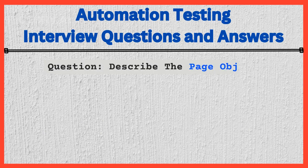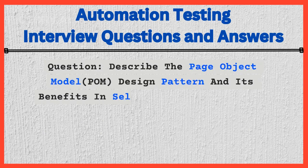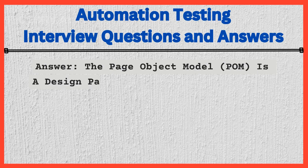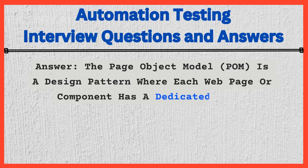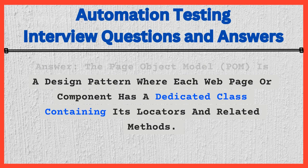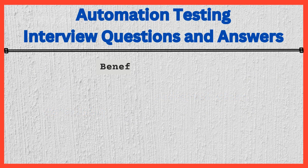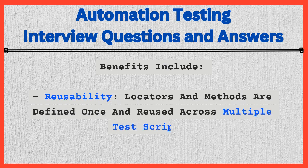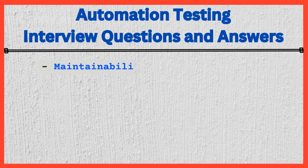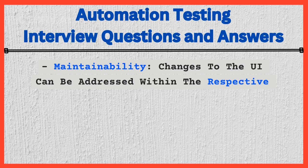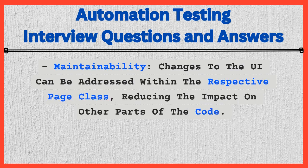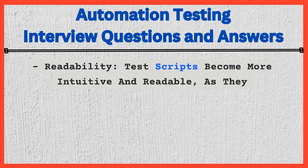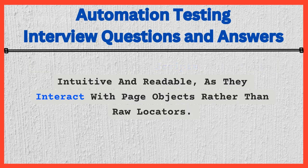Question: Describe the Page Object Model (POM) design pattern and its benefits in Selenium test automation. Answer: The Page Object Model (POM) is a design pattern where each web page or component has a dedicated class containing its locators and related methods. Benefits include: Reusability — locators and methods are defined once and reused across multiple test scripts. Maintainability — changes to the UI can be addressed within the respective page class, reducing the impact on other parts of the code. Readability — test scripts become more intuitive and readable, as they interact with page objects rather than raw locators.